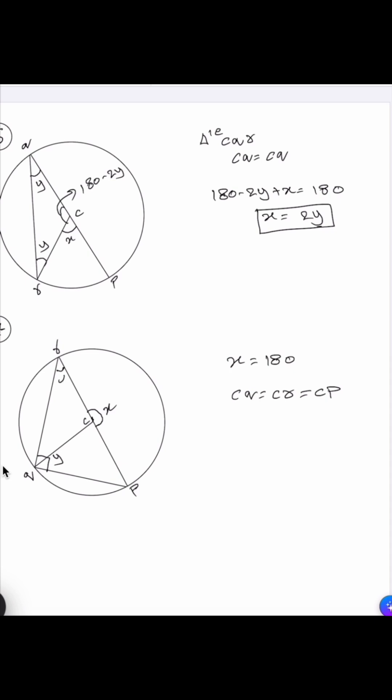Now if angle at R is equal to alpha, the angle at Q in the triangle is alpha. Again if angle at P is equal to beta, in the triangle angle at Q should be equal to beta.